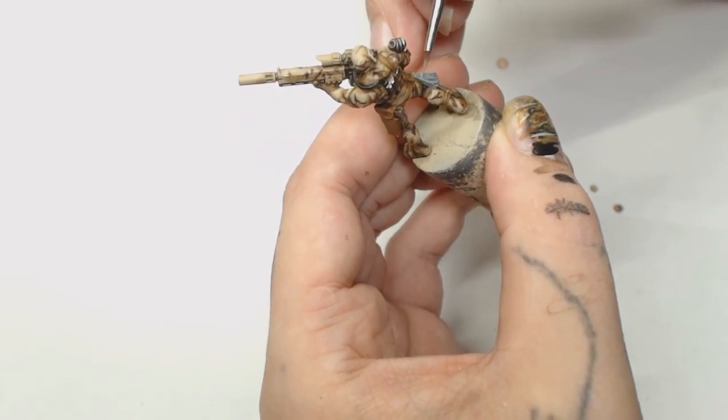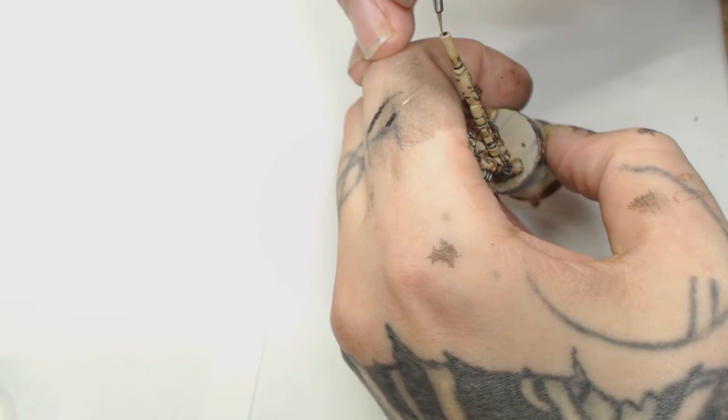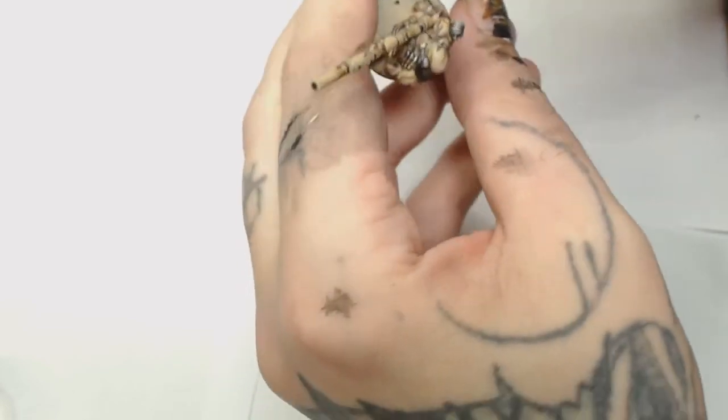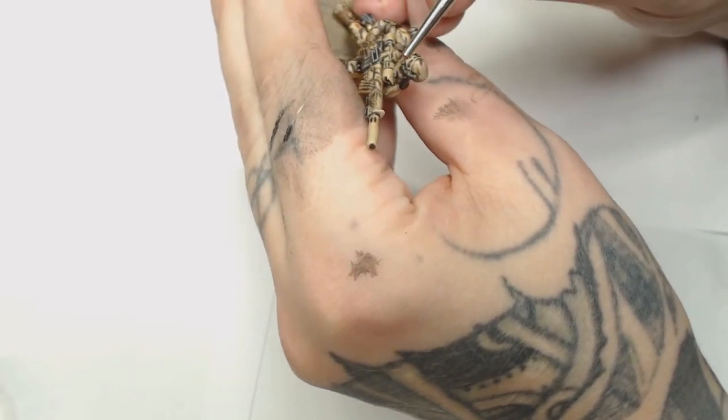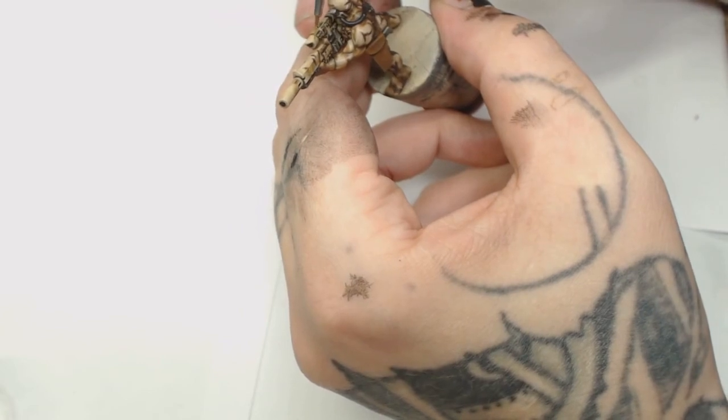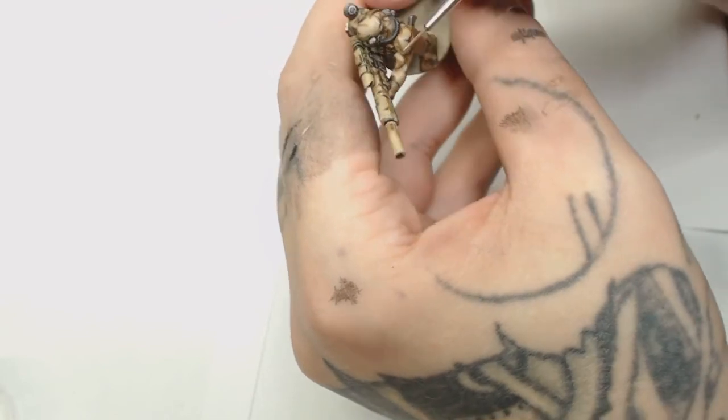Now we're going to edge highlight the barrel of the gun and all the top parts of the gun with its original color, which is khaki by Game Color. There's not too much to do with the khaki. There's not too many hard edges anymore - most of it's all covered in camo. You could edge highlight all the camo as well if you wanted to on the gun. I didn't deem it necessary - it would be too distracting, make the model look too noisy.